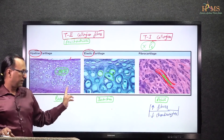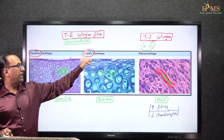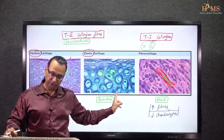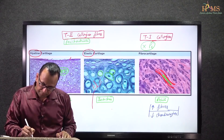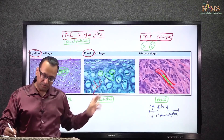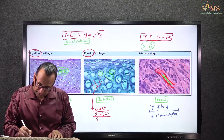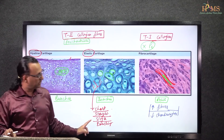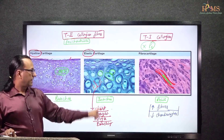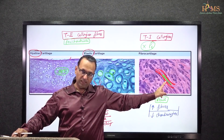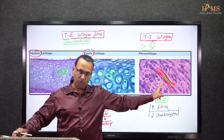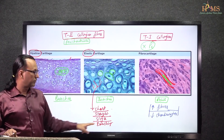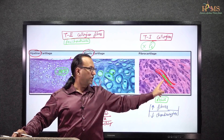Elastic and hyaline cartilage can be confused with each other. In elastic cartilage, you will see not only type 2 collagen fibers but also elastic fibers. These elastic fibers are identified by being short in length, straight, not wavy, single running, and branching. Comparing with collagen fibers: collagen fibers are long, wavy bundles, whereas elastic fibers are short, straight, single, and show branching — which is not seen in collagen fibers.